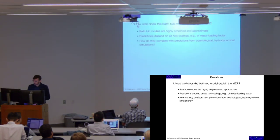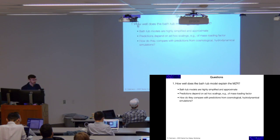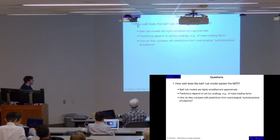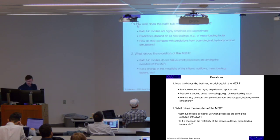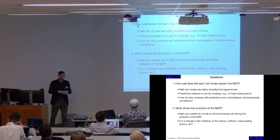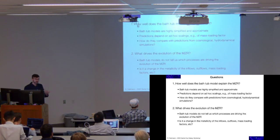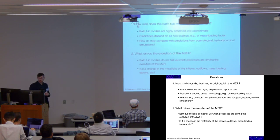Let's now pose some questions. The first: how well does the bathtub model explain the mass-metallicity relation? That was a very qualitative hand-waving argument — we want to see how well this really works. The bathtub model is super simplified; its predictions depend on ad hoc scalings, like assuming the mass loading factor is a power law of stellar mass. So how do the predictions of the bathtub model compare with predictions from cosmological simulations? Once we understand that and convince ourselves the bathtub model is reasonable, we can look at the terms in the bathtub model in more detail and understand what drives the evolution of the mass-metallicity relation — not only the mass dependence but also the redshift evolution. That's the basic idea of this talk.